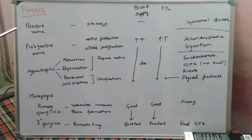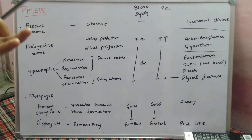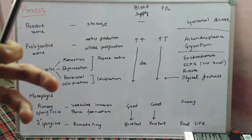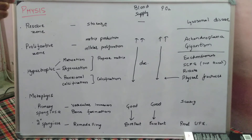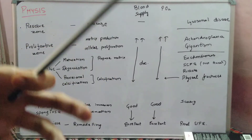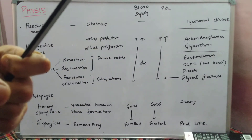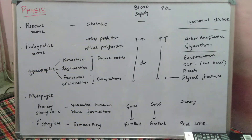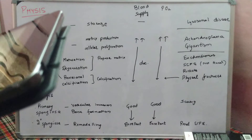Physeal growth is an example of endochondral ossification. Other examples include fracture healing with cast application or intramedullary nailing — cases of non-rigid fixation — where ossification occurs by endochondral ossification through callus formation. Intramembranous ossification occurs in cases of rigid fixation, such as with a compression plate, or in distraction histogenesis with external fixators like the Ilizarov or LRS, where bone is directly laid down.